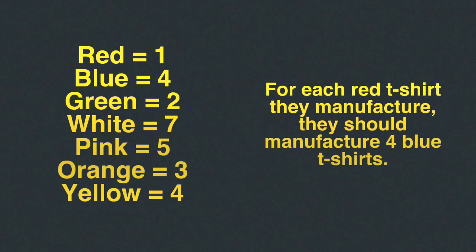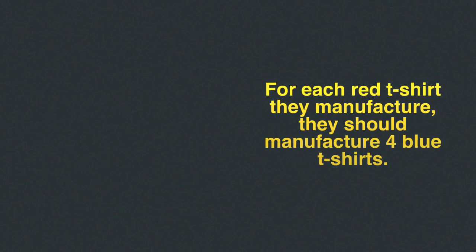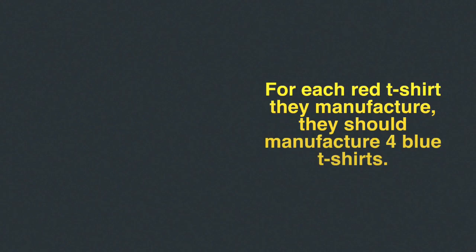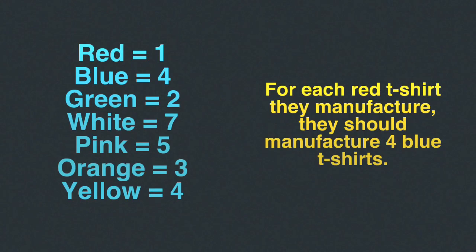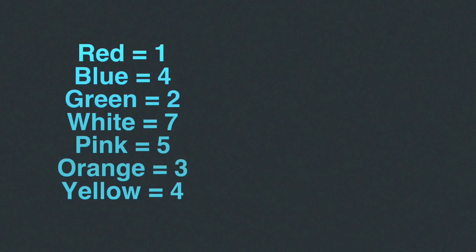Now let's attempt to do the opposite and pull a ratio out of a ratio relationship. Here's a ratio relationship: for each red t-shirt they manufacture, they should manufacture four blue t-shirts. What ratio is being represented here? It's one of these two — but which one is it? For each red t-shirt they manufacture, they should manufacture four blue t-shirts. Is that one to four or four to one?